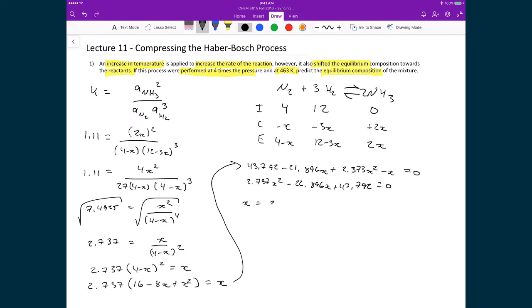X is equal to 22.896 plus or minus the square root of minus 22.896 squared minus 4 times 2.737 times 43.792, all divided by 2 times 2.737.